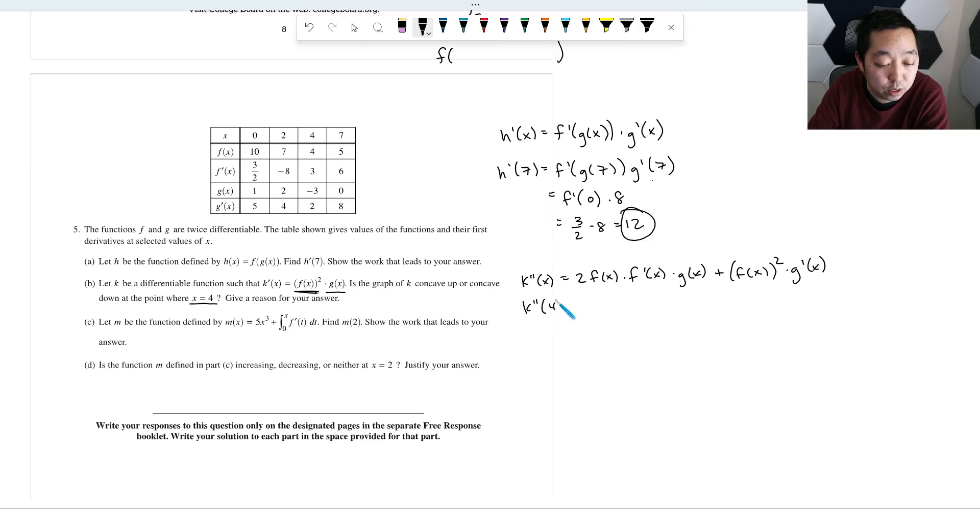And all I want to know is whether or not this, when I plug in 4, is it going to be, and I'm just going to write it all out just so I don't make any mistakes, f of 4 squared. I just want to know if this thing is positive or negative.